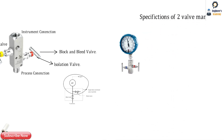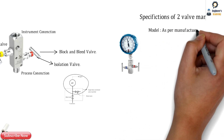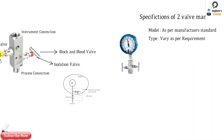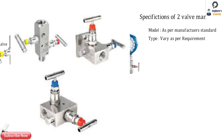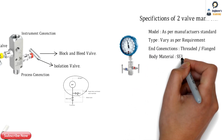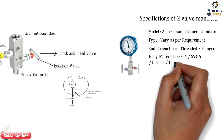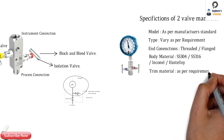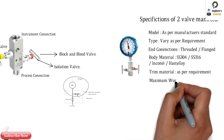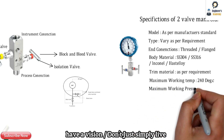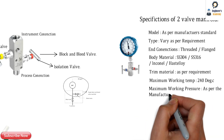For two-way manifold specifications: the model is as per manufacturer standard. The type varies per requirement and application — types include threaded, flanged, and female-by-female T-type manifolds. End connections can be threaded or flanged. The body material can be SS 304, SS 316, Inconel, Incoloy, Hastelloy, or other exotic materials. The trim material is as per requirement for wetted parts. The maximum working temperature is 240°C, and the maximum working pressure depends on the manufacturer's standards.